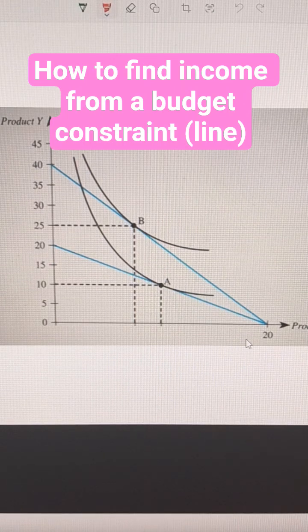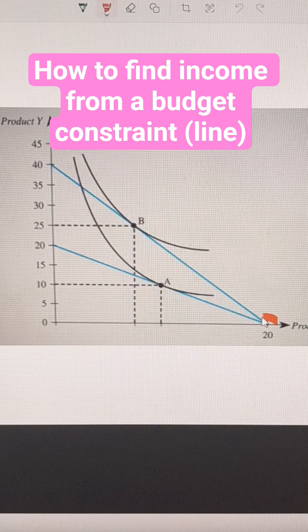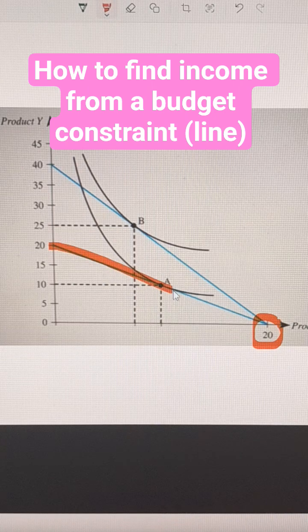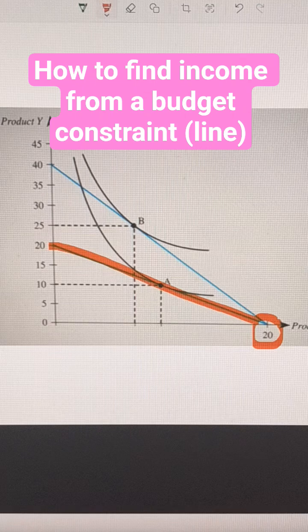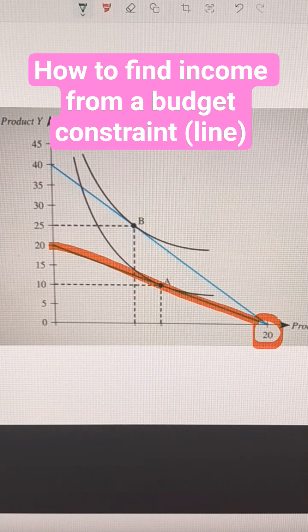How do we find the total consumer income when we know the budget line and we're given one of the prices? We can look at this budget line, which goes through point A.